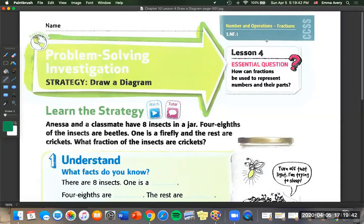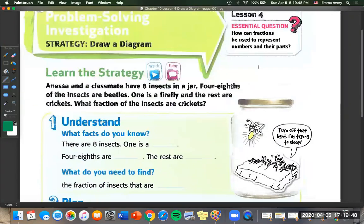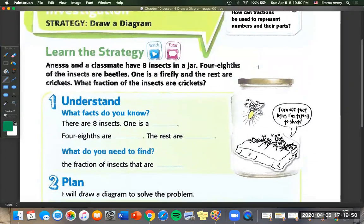Today we are going to do problem-solving investigation lesson four with the strategy of draw a diagram. So let's look at number one. Anessa and a classmate have eight insects in a jar. Four eighths of the insects are beetles. One is a firefly and the rest are crickets. What fraction of the insects are crickets?